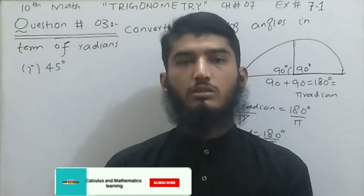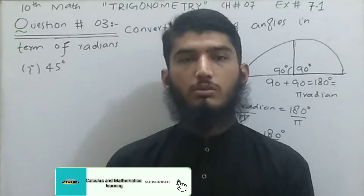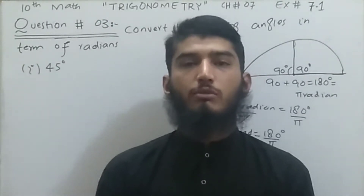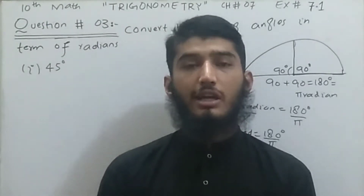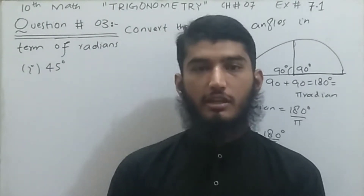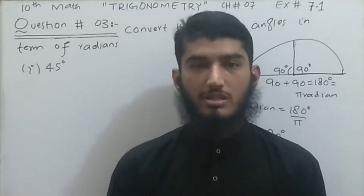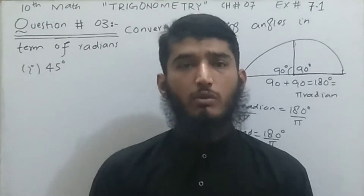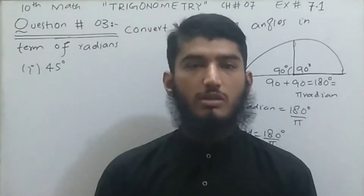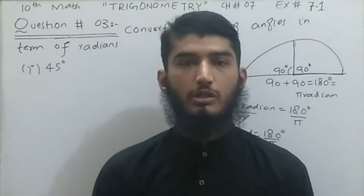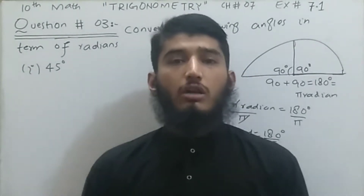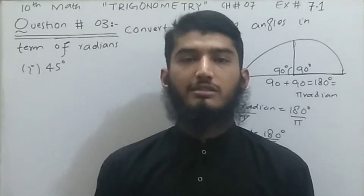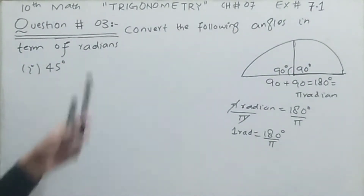Bismillahirrahmanirrahim, welcome to my YouTube channel Calculus and Mathematics Learning. In the previous video I solved question number three related with exercise 7.5, converting radian angles to degrees. Today I will solve the last question of exercise 7.1, question number four, where we will convert angles from degree to the measurement of radian in the circular system.